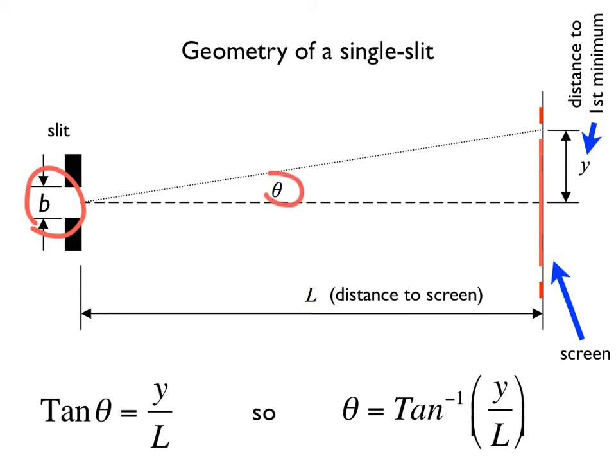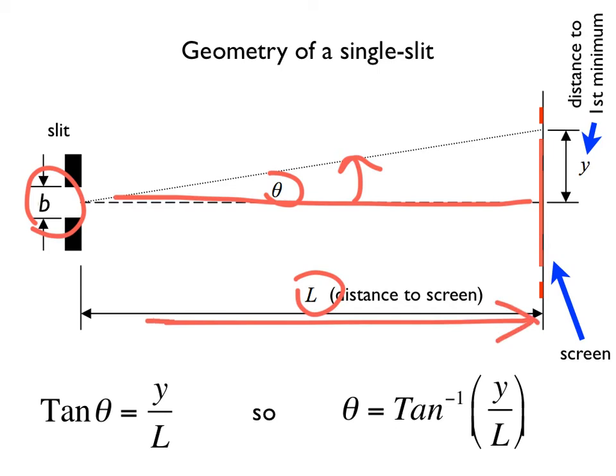Theta is the angle that the light is diffracted. It's measured with respect to this center line, and it can be measured in degrees or in radians. L is the distance from the slit to the screen. So this distance here is L for length. And Y is the linear distance from the center line, or from the middle of the central maximum to the first minimum. This distance here is Y.